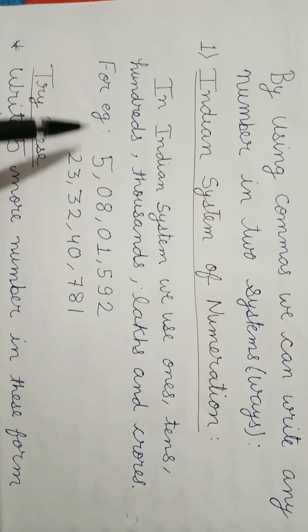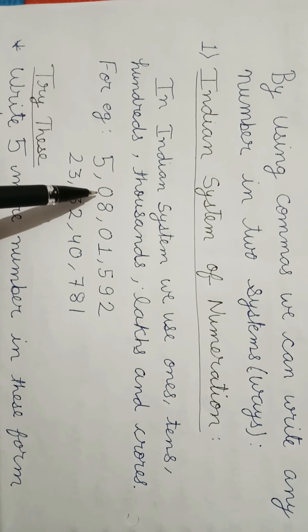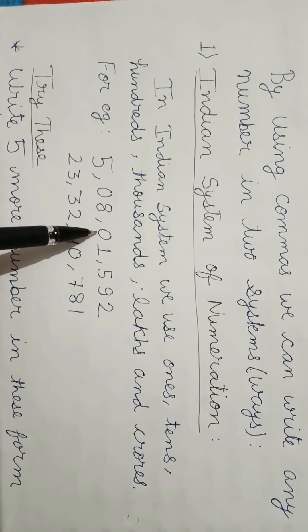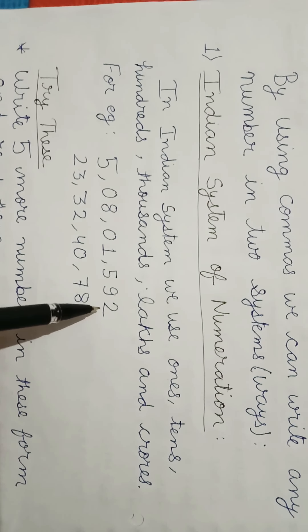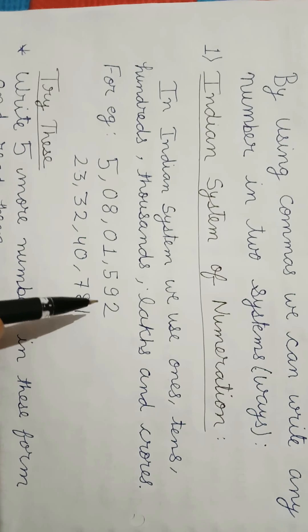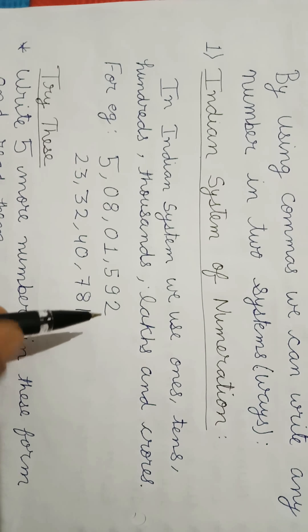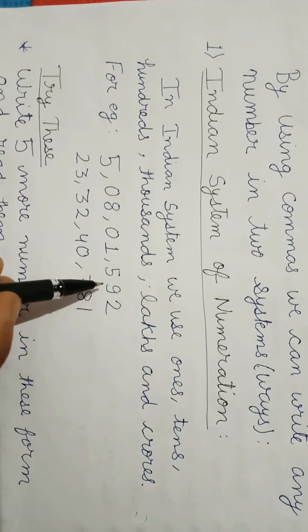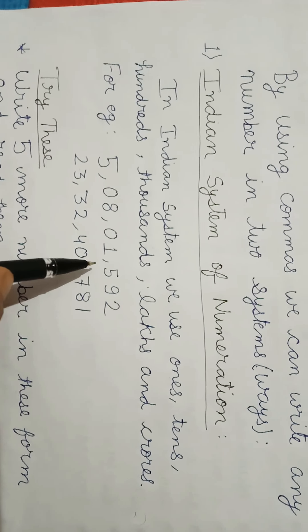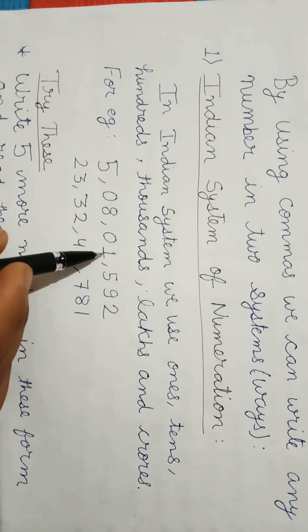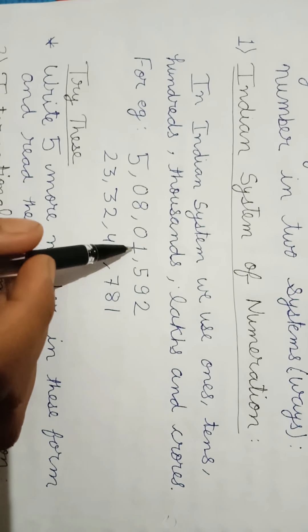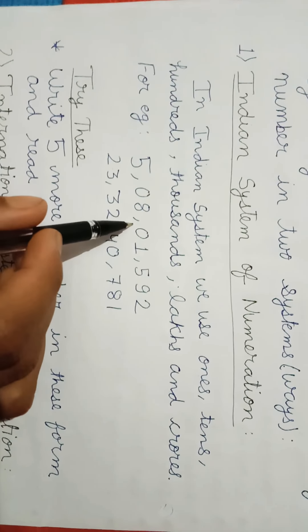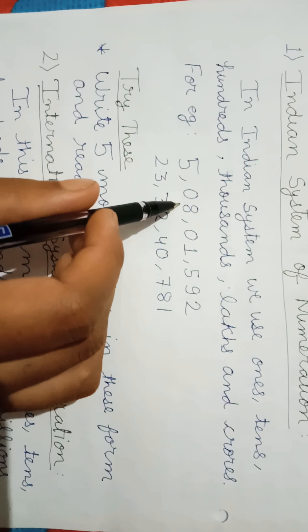For example, in 50801592, the first comma in Indian system is from right side from three digits and marks it as thousands.